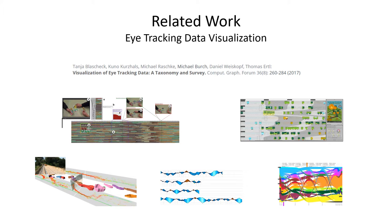There is a lot of related work in the field of eye-tracking data visualization. A recent state-of-the-art report describes several approaches differing in the stimuli types considered and the kind of data visualized. Moreover, the way how it is visualized also plays a crucial role for finding insights. Here you see five examples: gaze stripes top left, fixation image charts top right, space-time cubes bottom left, color bands bottom center, and AOI rivers at the bottom right.